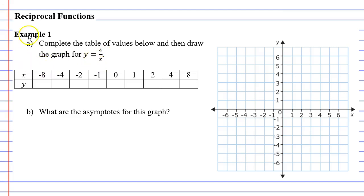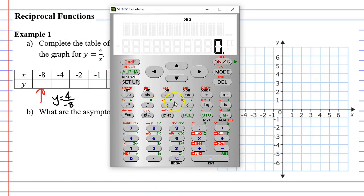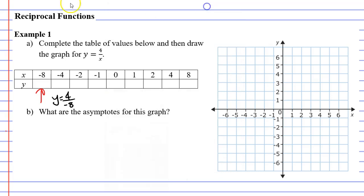We'll start in the first column where x is negative 8. Substituting that into our equation we get y equals 4 over x, or in this case y equals 4 over negative 8. I'm going to use the calculator: 4 divide negative 8, and it gives me negative 0.5.